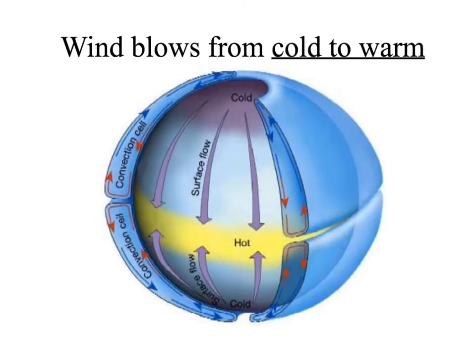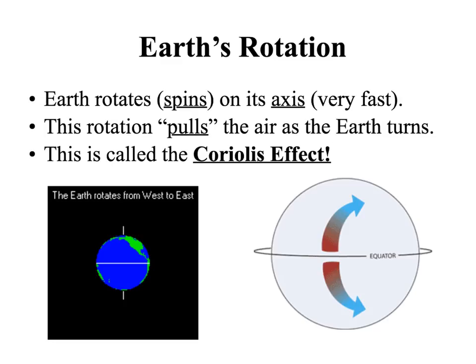At the north pole we're going to have higher pressure, and at the equator we're going to have lower pressure. If that were the only thing involved, the wind would always blow from the north down to the equator. But because of the Earth's rotation, we get something called the Coriolis effect. This rotation pulls the air along as the Earth turns, and depending on whether the air is colder or warmer, that's going to affect the direction of the wind. The Earth's rotation also greatly affects the winds.